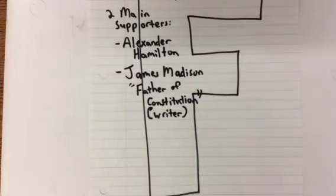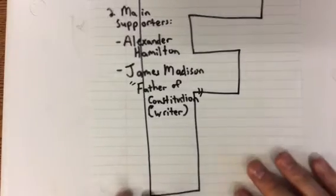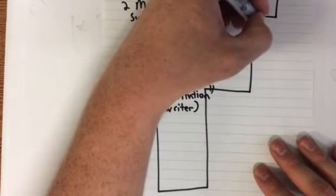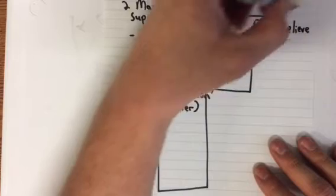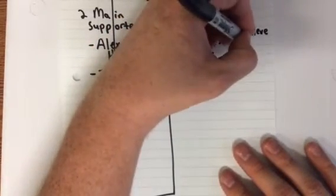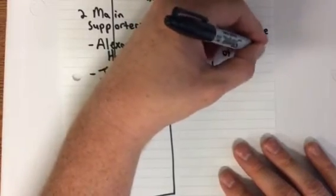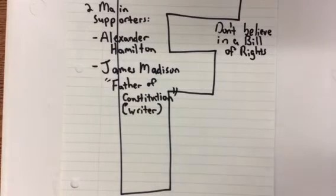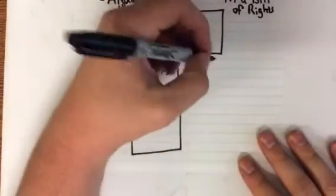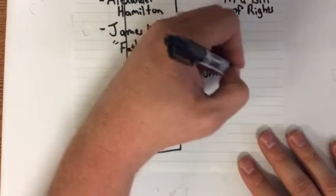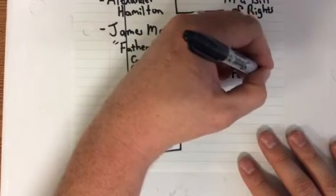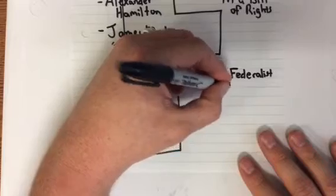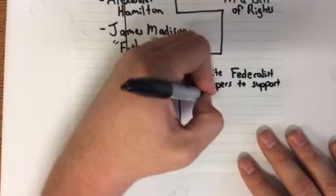The Federalists really wanted this whole idea of the Constitution. They did not believe in a Bill of Rights — they believed the Constitution already has those rights in it. The grievances we had against the British are mentioned, but there's no need to write out all the things you have rights for. To support the Constitution, they are going to write something called the Federalist Papers.